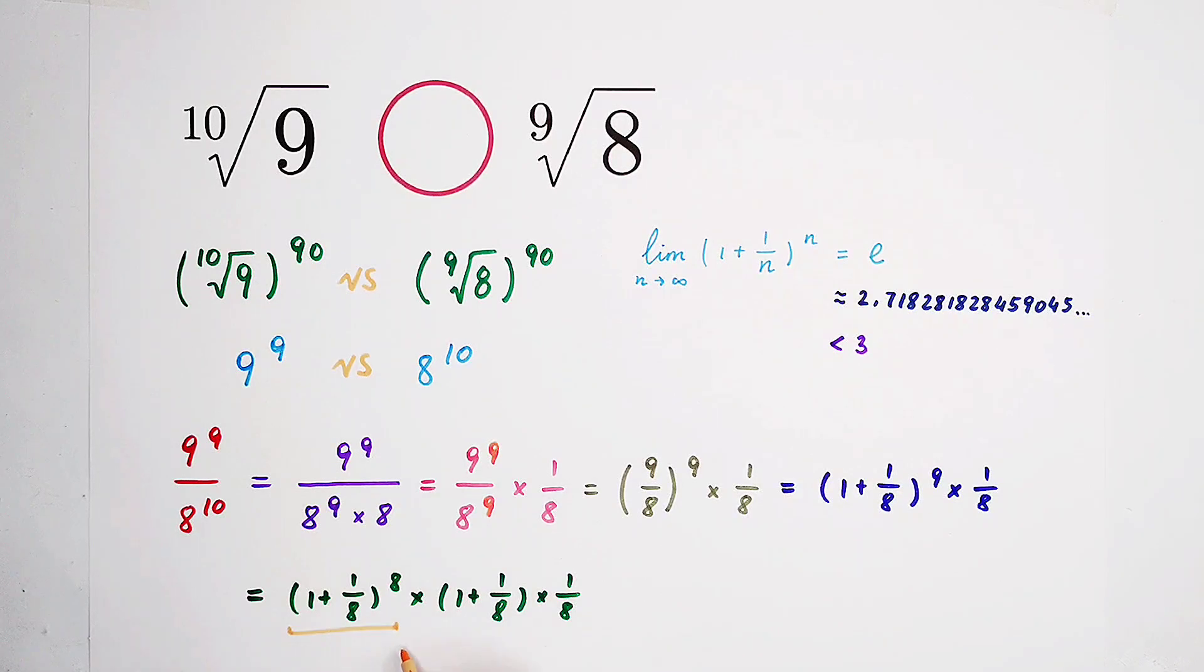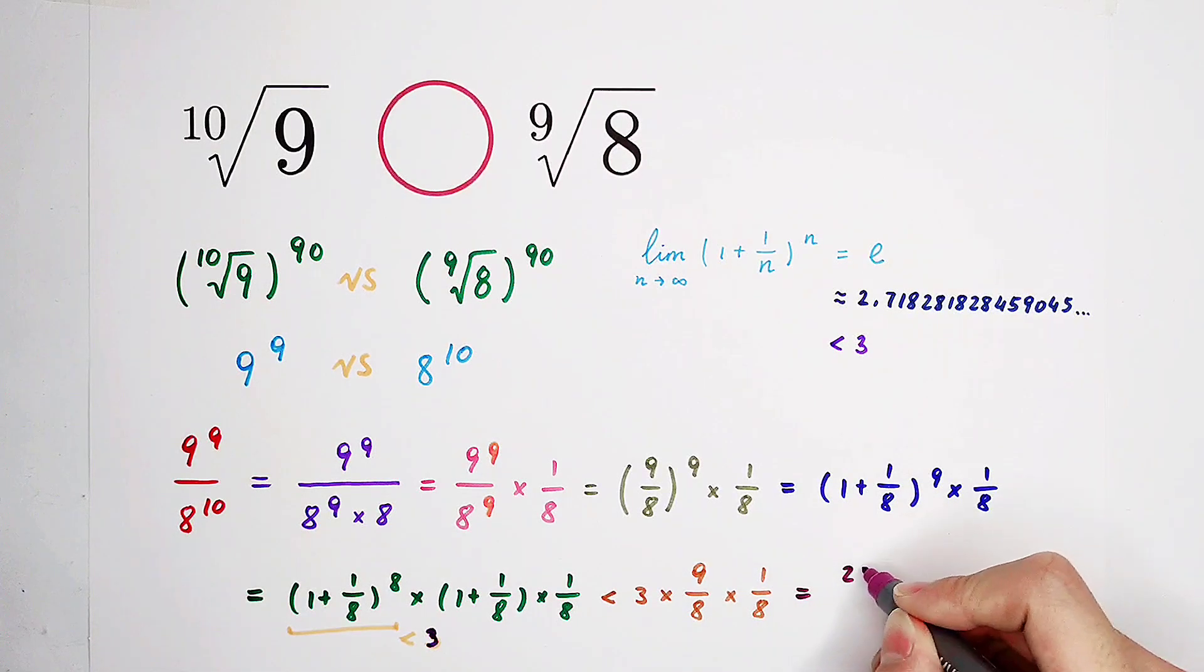So, it is smaller than 3 times 1 plus 1 over 8, which is 9 over 8, times 1 over 8. In the end, this guy is 27 over 64.